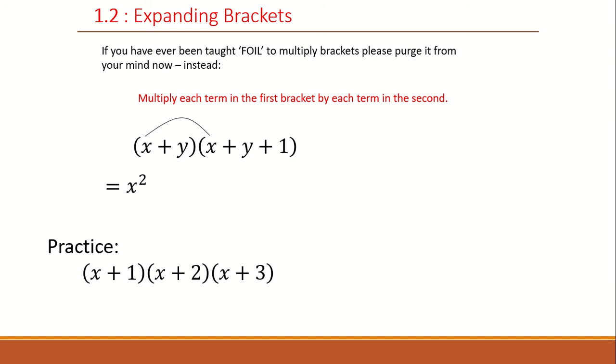And then we'll take x multiplied by y to get xy, and then we'll do x multiplied by 1, which is x. Then we'll take the second term in the first bracket, which is y, and multiply it by the first term in the second bracket, which is an x, to get xy.